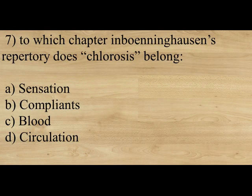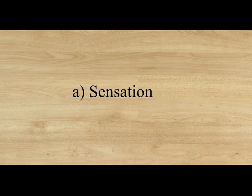To which chapter in Boenninghausen's repertory does chlorosis belong? Option A: Sensation. Option B: Compliance. Option C: Blood. Option D: Circulation. The answer is Sensation. Boenninghausen's repertory is divided into seven sections: 1) Mind and intellect, 2) Parts of body and organs, 3) Sensation and compliance in general, 4) Sleep and dreams, 5) Fever, 6) Alterations of the state of health, 7) Relationship of remedies.